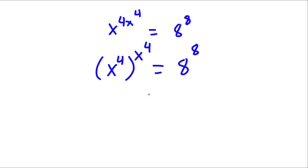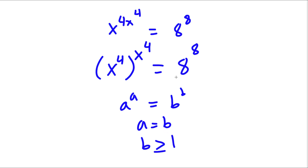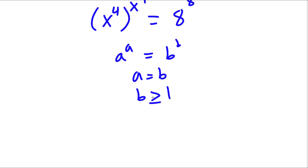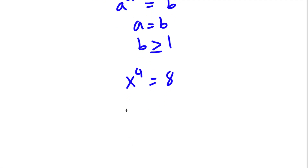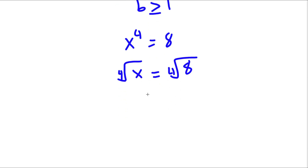Now if I have something in the form a to the power of a is equal to b to the power of b, this means that a is equal to b, as long as b is greater than or equal to 1. In this case, b is 8, which is greater than or equal to 1, meaning x to the power of 4 is equal to 8. So now to solve this, I'm going to take the root of 4 on both sides. These two will cancel out, and I'll be left with x is equal to the 4th root of 8.